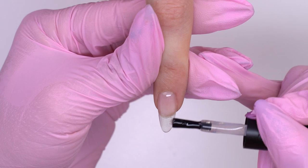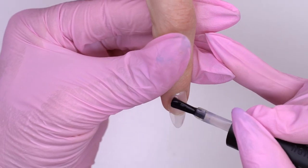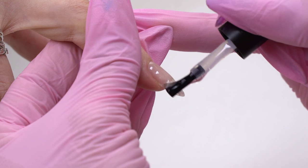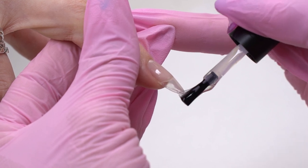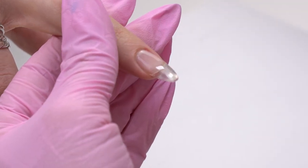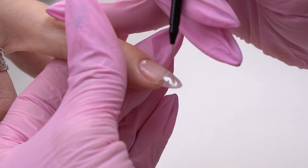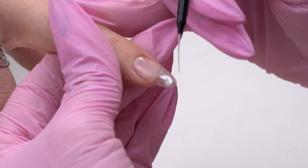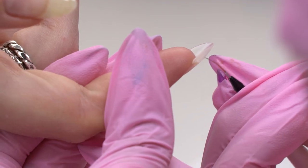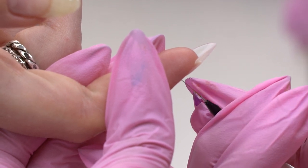Turn the finger over to let the gel flow to the highest point. We can lift up the free edge for the gel to flow to the stress zone. The tip should not be too thick. I spread the material with a thin brush.